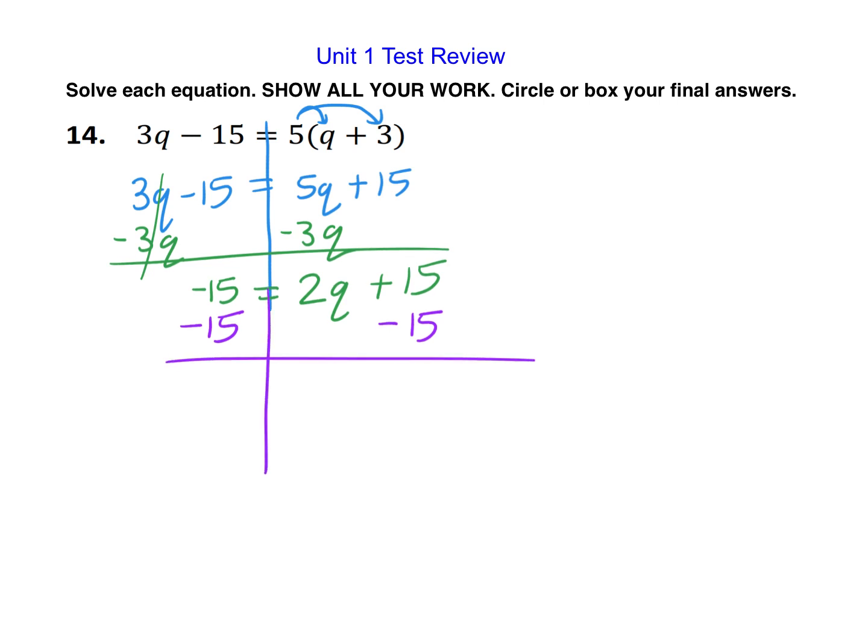And that's going to be, careful here, that's not 0. A negative 15 minus 15 is negative 30. Use your calculator if you need help with that. And that's equal to 2q. So my final step here is just going to be to divide by 2 to undo that number in front of the q. And when we do that, we get negative 15. So q equals negative 15 is our final answer.